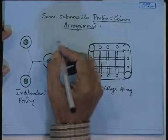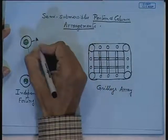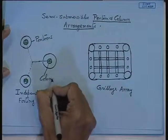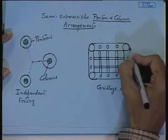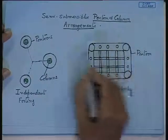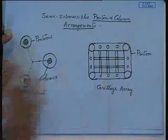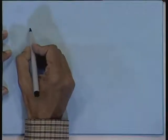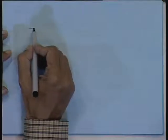Another type has the pontoon arrangement in a closed form, where the pontoons are independent footing with a large closed pontoon. This sort of arrangement is not very favorable for transport or movement from one place to another — it is only good for a fixed location. Another type is a linear array: instead of a grillage you can have multiple longitudinal pontoons.